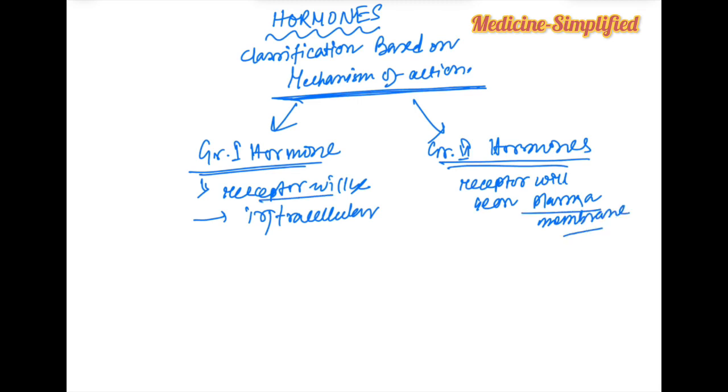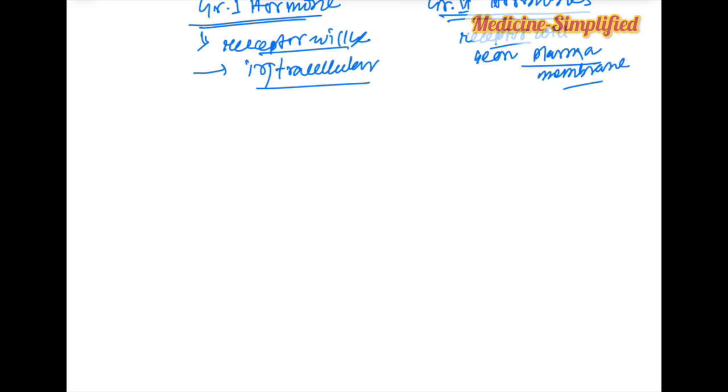And in case the receptor in group two hormones, the receptor will be on plasma membrane. So the first point group one hormone, the receptor will be intracellular and group two hormones will be in plasma membrane. So what are they?